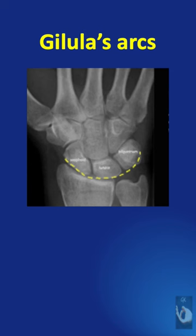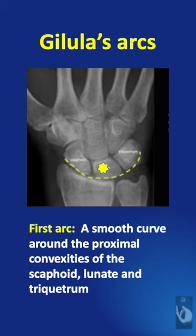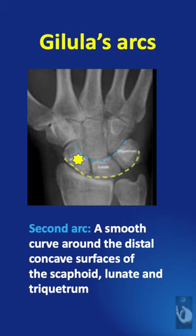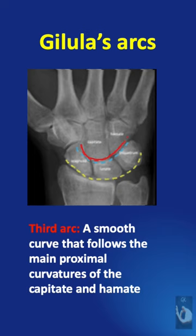The first arc is a smooth curve around the proximal convexities of the scaphoid, lunate, and triquetrum. The second arc is a smooth curve around the distal concave surfaces of the scaphoid, lunate, and triquetrum. The third arc is a smooth curve that follows the main proximal curvatures of the capitate and the hamate.